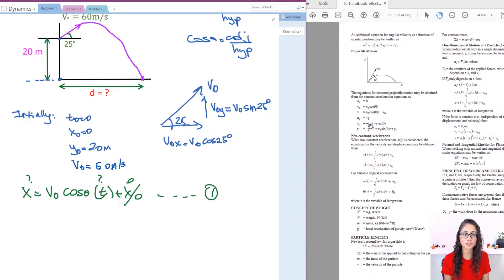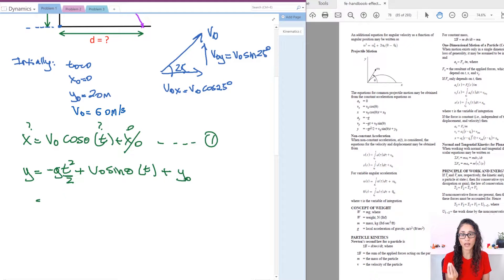Now we can't really use this equation because we don't have vy, but we can use this equation. We have y, we have y0, we have everything here except t. So we can easily solve for t. And then from there, we can go back to equation one and just plug in t so that we can find the x, the distance.